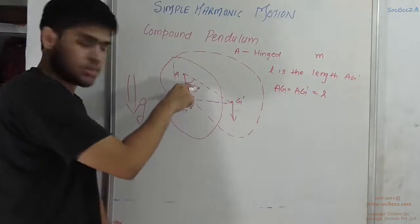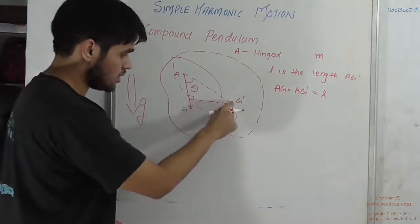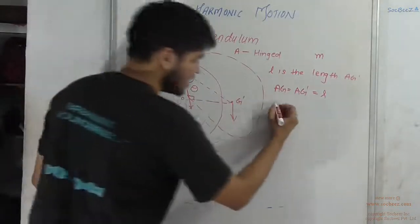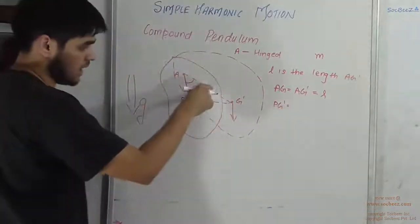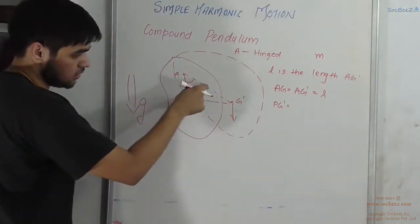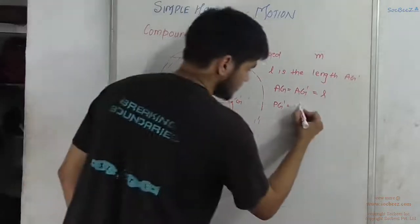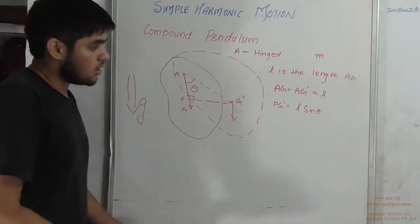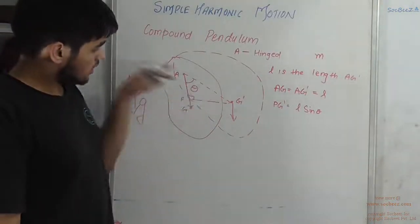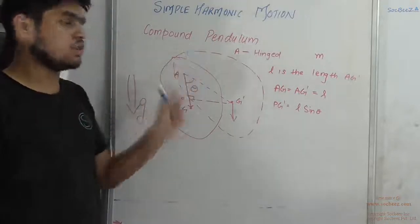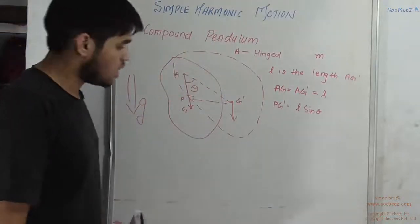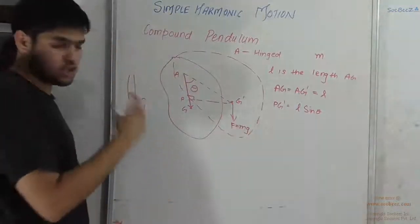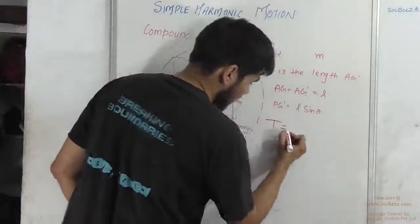We know the angle theta. Drawing a perpendicular from G' onto the axis AG — suppose this foot is point P — the length PG' will be L sin theta. Now we can see that about this axis a torque will act on the body in the new position. The force is F = mg, and we need to find the torque T.